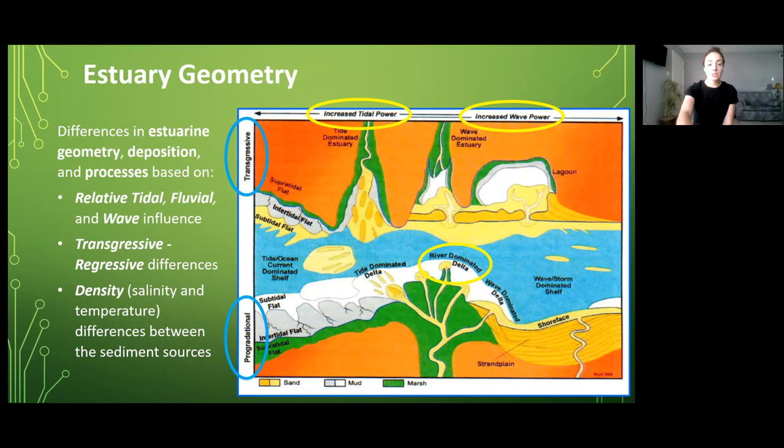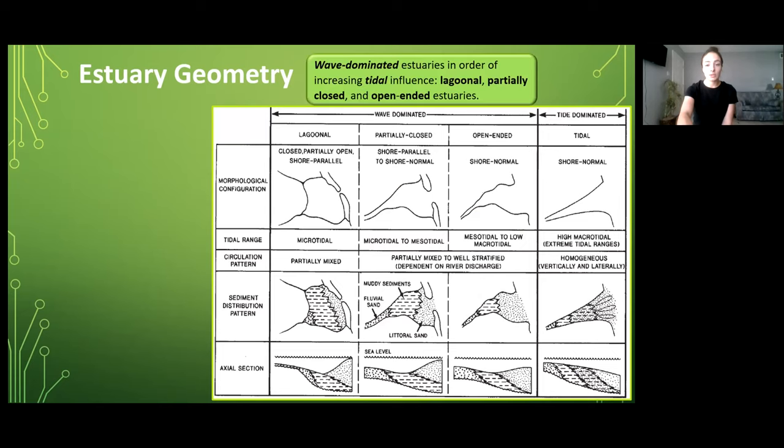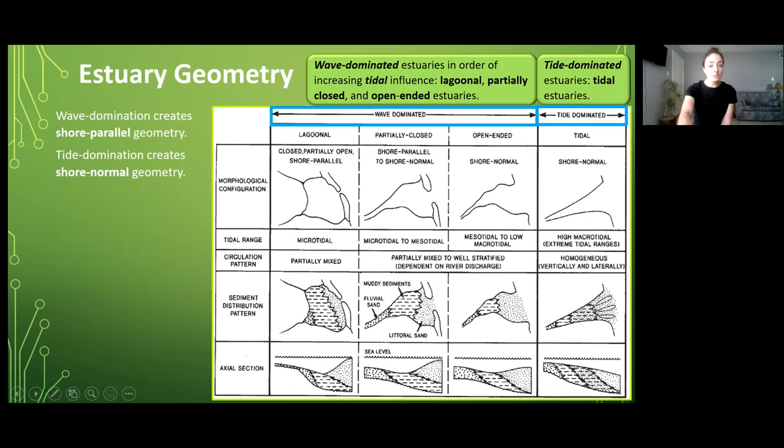So first let's talk about the geometry and what controls the geometry of estuaries. We can see in this figure we have wave dominated estuaries in the order of increasing tidal influence going from lagoonal to partially closed to open-ended estuaries and then tide dominated estuaries. We can see that the geometry in wave dominated estuaries is shore parallel whereas the geometry in tidal dominated estuaries is shore normal.